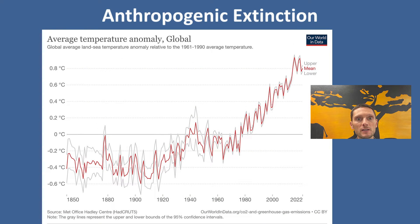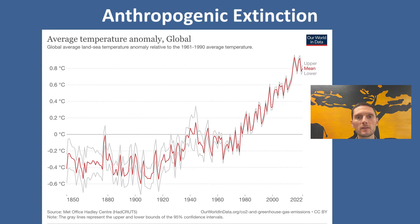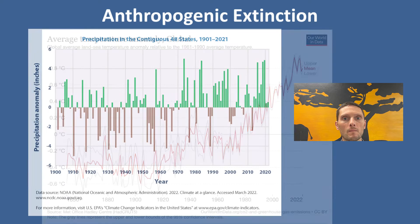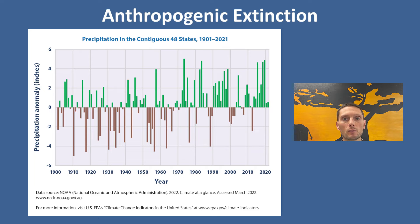A further cause is global climate change. As conditions around the world begin to change, species can adapt to those changes — but adaptation takes many generations, and if conditions change too quickly, a species doesn't have time to adapt. Additionally, human activities are causing rapid changes in temperature, rainfall, snow cover, and other environmental variables, which compounds and speeds up this process.